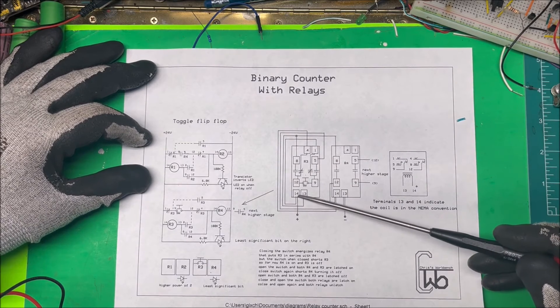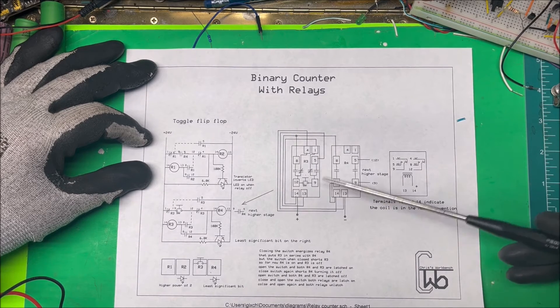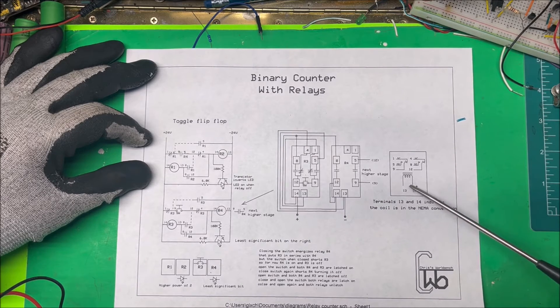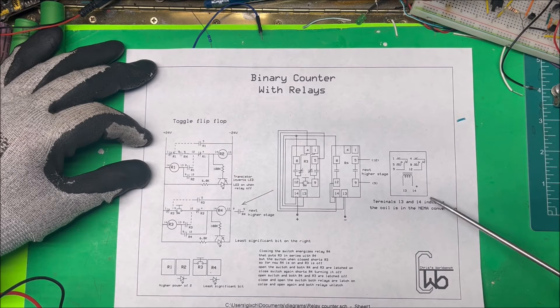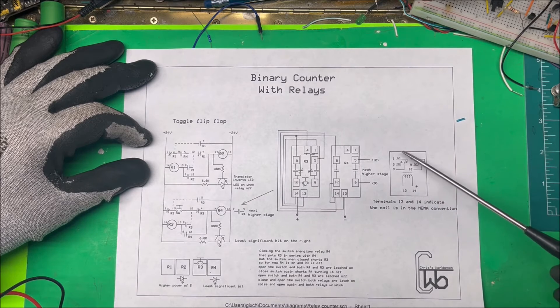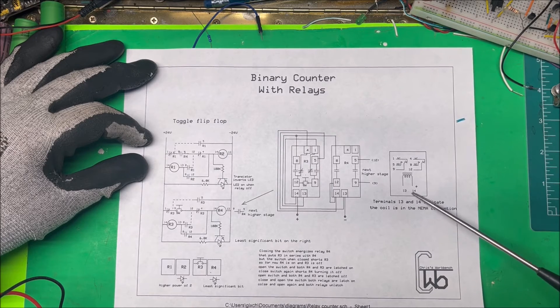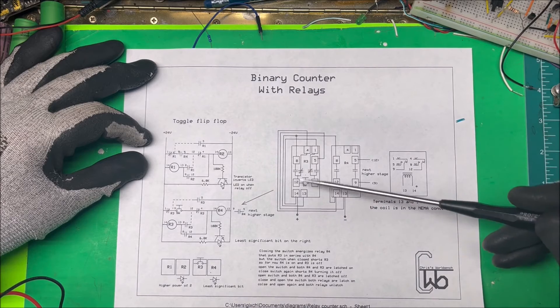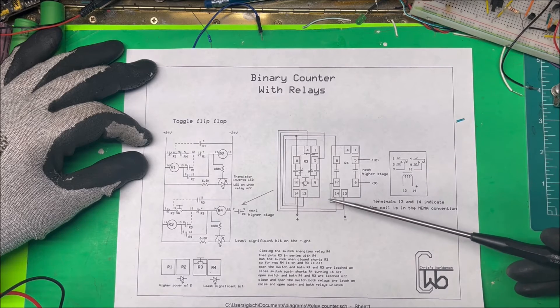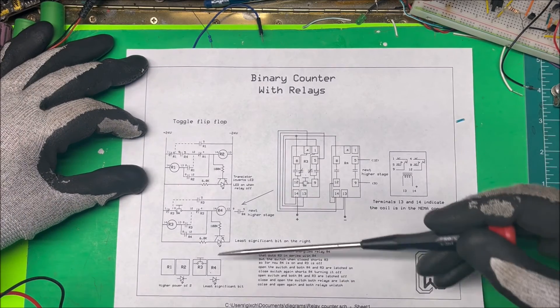That's all there is to that, and then this is how we can wire it together here. Now on these relays, 13 and 14 are the coil. Here it is over here. When you see the 13 and 14, that indicates that it's a NEMA convention coil. They do that so that single pole, double pole, triple, and quadruple pole relays will all work and have the same numbers. Some of the relays come just one through eight and that's fine too.